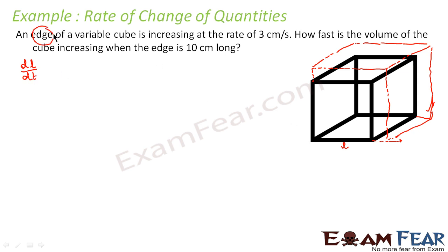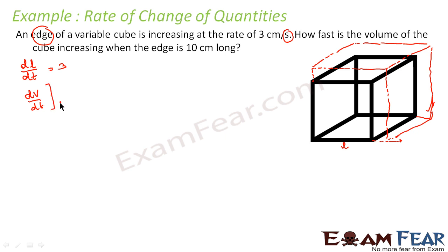The edge is changing with respect to time in centimeters per second, so dl/dt equals 3. This is given. We have to find dV/dt — how fast the volume is increasing — where l equals 10 centimeters.